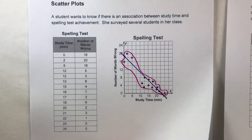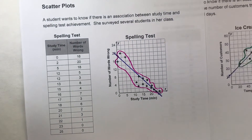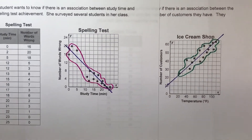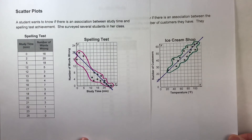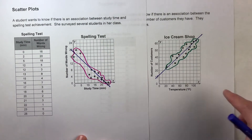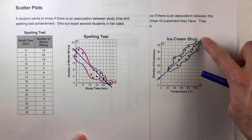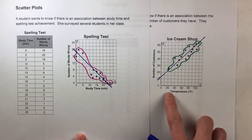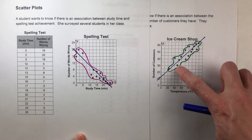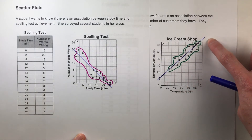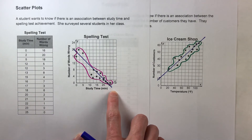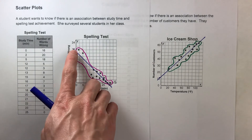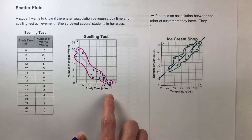Notice the difference between the two situations. In the ice cream shop there was a positive association — as temperature increased, customers increased. The spelling test data had a negative association, meaning as study time increased, the number of words wrong went down.